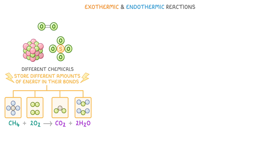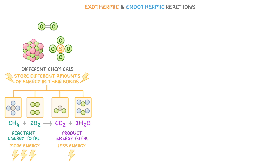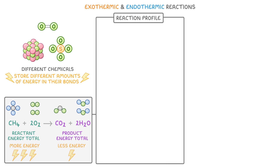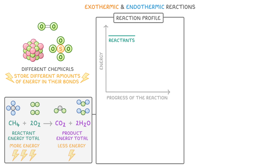What's important to us is how much energy all of the reactants have in total compared to how much energy all the products have in total. In this particular case, the products would have less energy than the reactants. We can show this on a reaction profile, where the y-axis is the total energy of the molecules and the x-axis is the progress of the reaction. On the left we place our reactants, and on the right we put our products — but importantly, for this reaction we'd put the products lower down, because they have less energy.